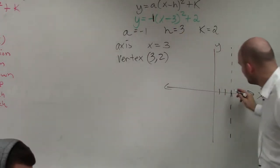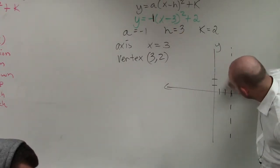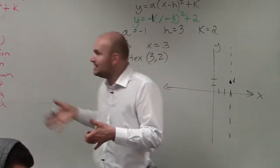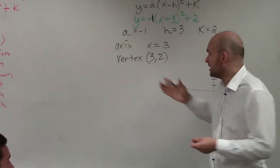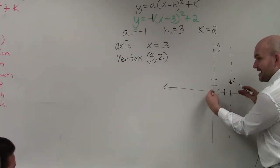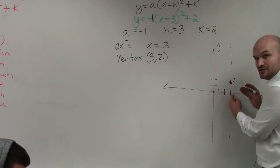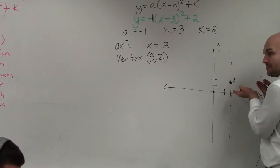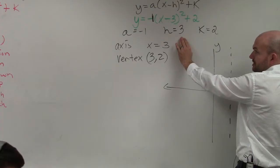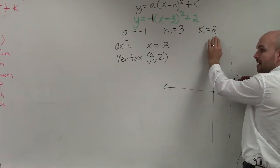So I'm going to go over 3 and up 2 units, 1, 2. So now that is my vertex. So what you guys can see is from my parent graph that's over there, I've taken my old vertex at 0, 0, and I've translated the graph 3 units to the right and 2 units up. So h told us to shift the graph 3 units to the right, and k told us to shift the graph 2 units up.